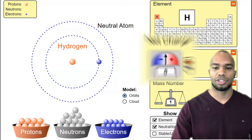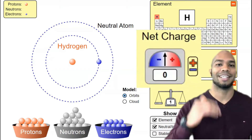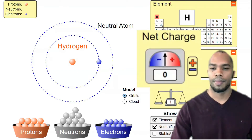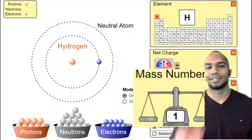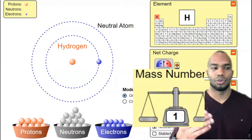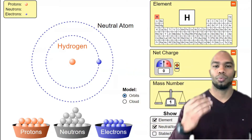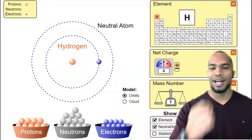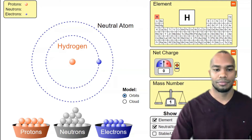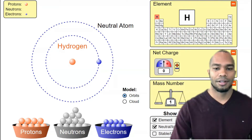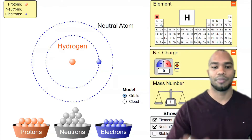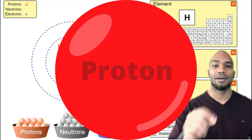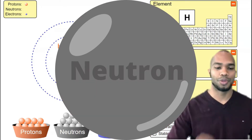Notice the charge is zero, meaning it has a neutral charge, and the mass number is one. Now, what determines the mass of the atom? We've actually already learned this. There are two particles that determine the mass of the atom: the proton and the neutron.